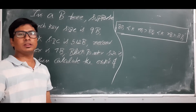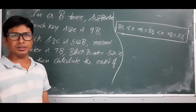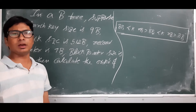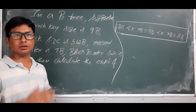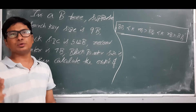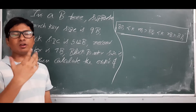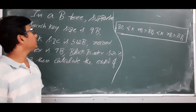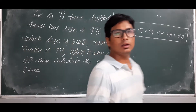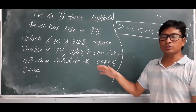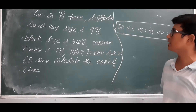Good morning students. In the last video we discussed the properties of B-trees. For better understanding, we took a small example to explain the properties and how to calculate the minimum number of children and minimum number of keys for all the nodes. Now we will take a small example of the kind of questions usually asked in GATE exams.